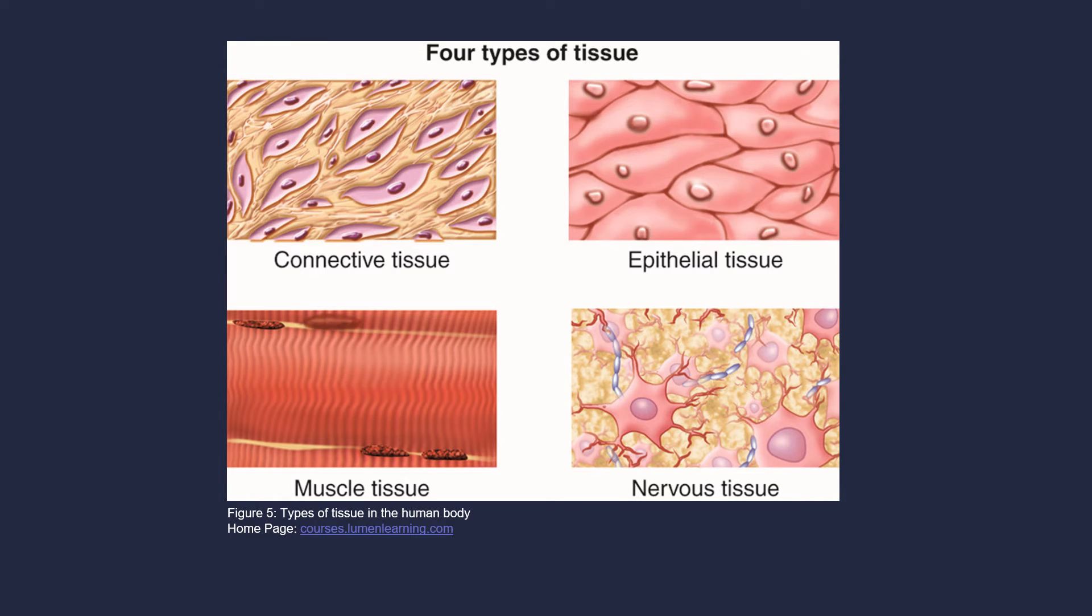Tissues in the human body are of four different types: epithelial, connective, muscle, and nervous.